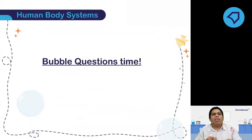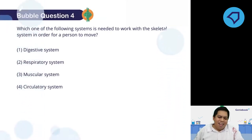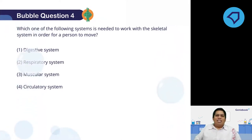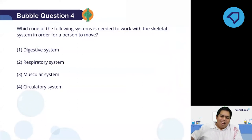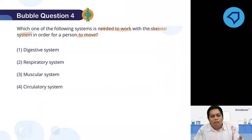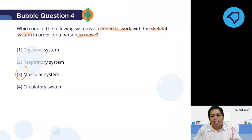Before the bubble questions — make sure you know that systems need to work together for your body to stay healthy and to function properly. Are you ready for some more bubble questions? Let's look at the first one — this one is just a warm-up. I'll start the timer right now. Wow — this is like 95%! Well done. The question asked: which system is needed to work with the skeletal system in order for a person to move? Remember, movement involves the skeletal and muscular system, so the answer is number three.